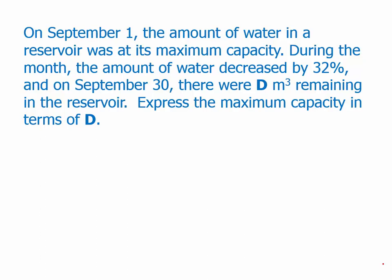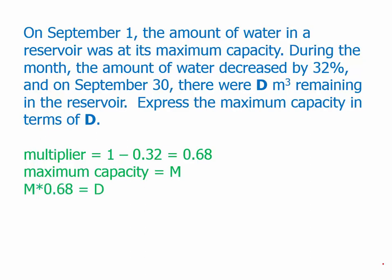So we have to introduce a variable for the starting amount. First, we create the multiplier: 1 minus 0.32 for a percent decrease, that turns out to be 0.68. The maximum capacity, I'll call that M. So M was decreased by 32%, meaning it was multiplied by 0.68, and that results in D at the end of the month. All we want to do is solve for M, so divide by 0.68, and that's the answer.